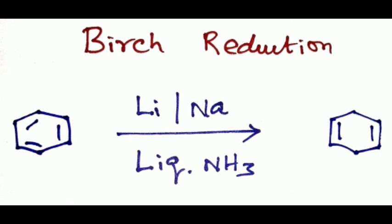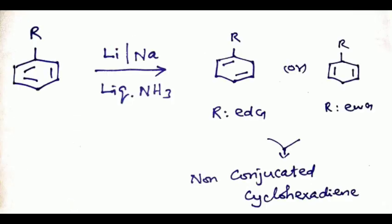This is the general form of Birch reduction. When an electron donating group R is present, we get the first product. With an electron withdrawing group, we get the second product. Both are non-conjugated cyclohexadienes.